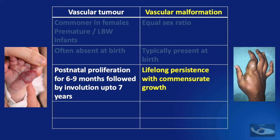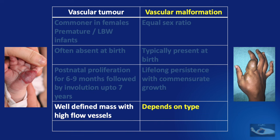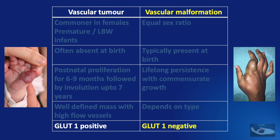Vascular malformations have a lifelong persistence with commensurate growth with the individual. Vascular tumors are a well-defined mass with high flow vessels, whereas vascular malformations depend on the type. Vascular tumors are GLUT1 positive whereas vascular malformations are GLUT1 negative. GLUT1 refers to the glucose transporter protein 1, which facilitates the transfer of glucose across the plasma membranes.